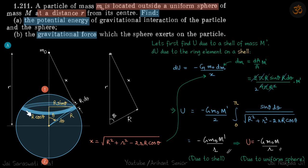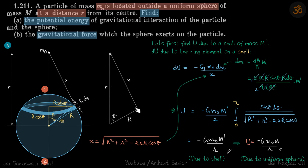The area dA of this ring is 2π r sinθ times r dθ, and the total area A is 4π r², times M'. Now we have a term in θ and dθ, so let's write x also in terms of θ. For that we consider this vector triangle: M0 is at a distance R from the center, this distance is r, and the distance we need is x, with angle θ. From the triangle, x is the diagonal, so x equals the square root of R² plus r² minus 2Rr cosθ.